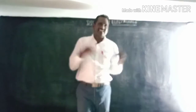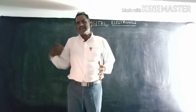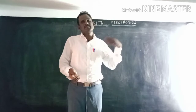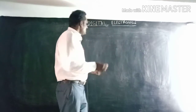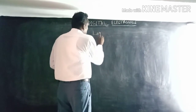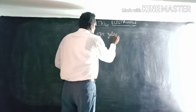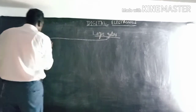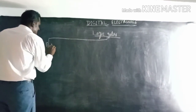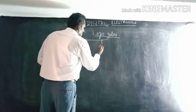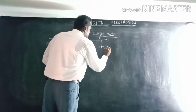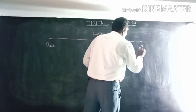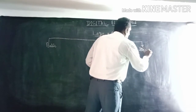Logic gates are basically classified into three types: basic logic gates, universal logic gates, and special logic gates.